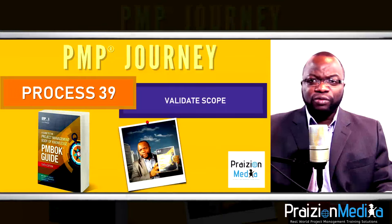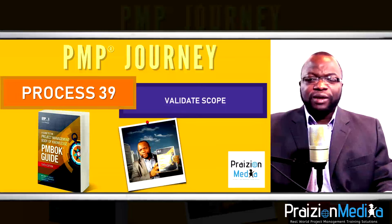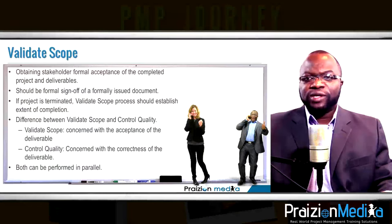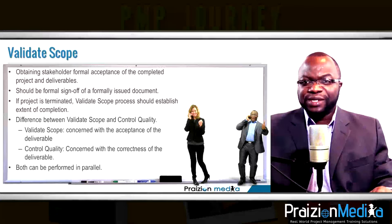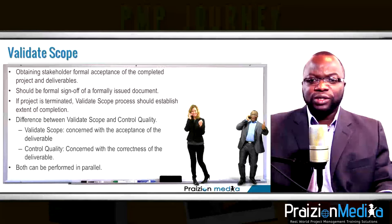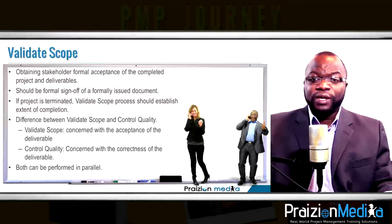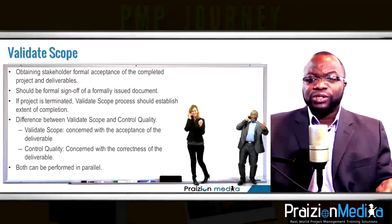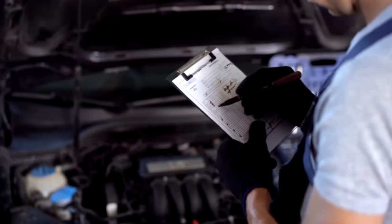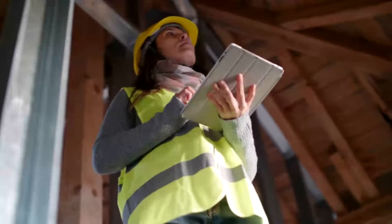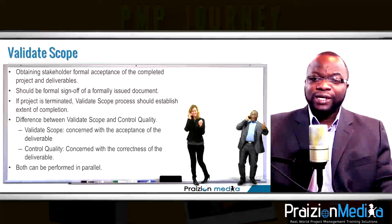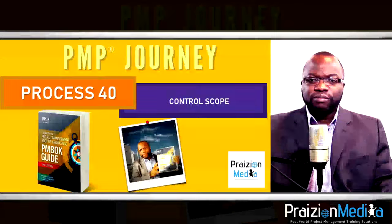Process 39: Validate scope. This is customer-focused — the customer inspects the verified deliverable that has been found fit for use by the performing organization. The performing organization first internally inspects the deliverable, and then the customer externally inspects it to validate that the entire scope, requirements, and what was needed is indeed inherent in the deliverable.